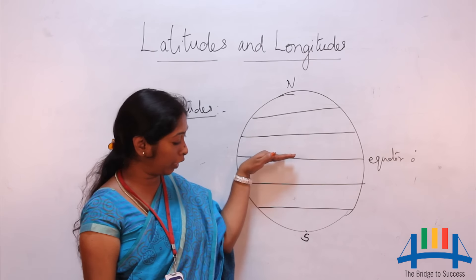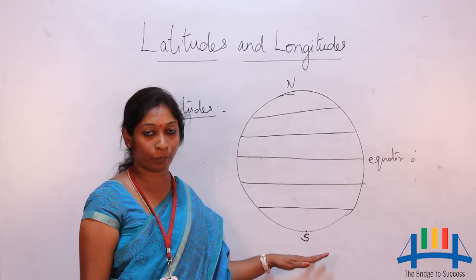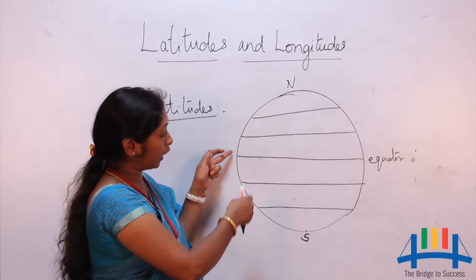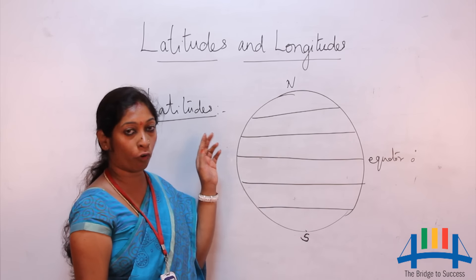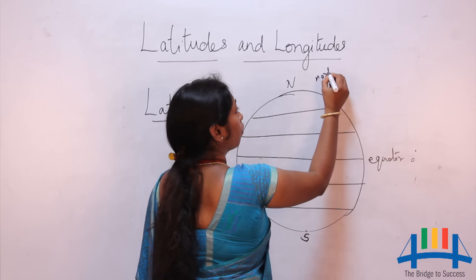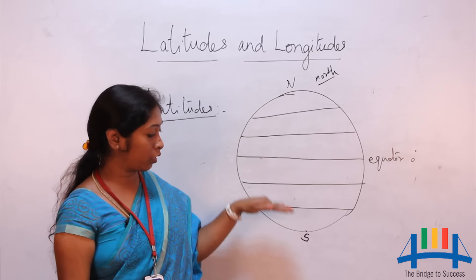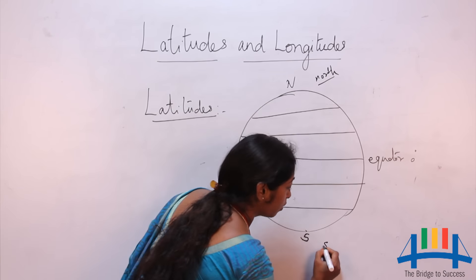There are 90 latitudes in the northern hemisphere, numbered 1 to 90 followed by the letter N which stands for north, and 90 latitudes towards the south which are followed by the letter S for south.